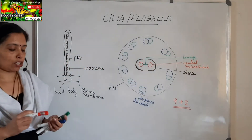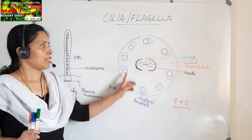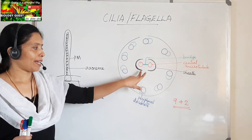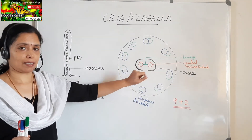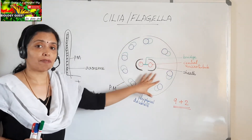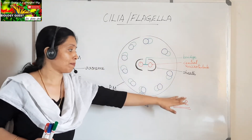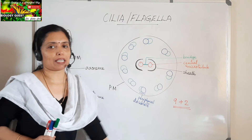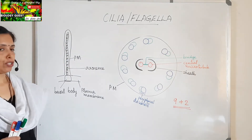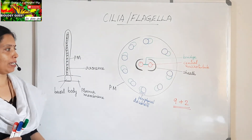This arrangement is called the nine plus two arrangement, because there are nine peripheral microtubules and two at the center. Cilia and flagella have this nine plus two arrangement of microtubular fibers.